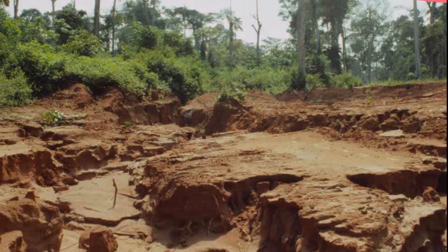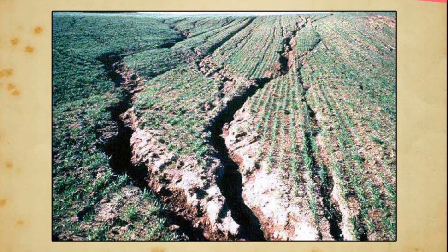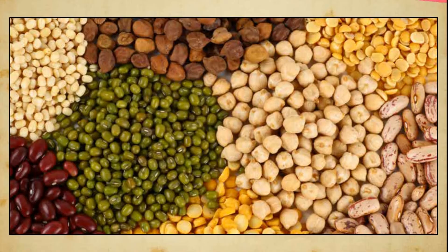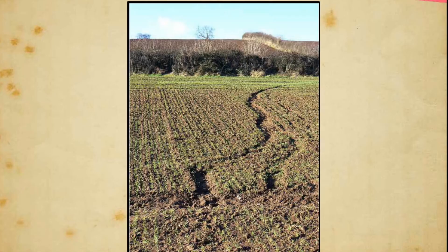Soil depletion and erosion are the two main problems of soil. Continuous cultivation of crops robs the soil of its fertility. If the same crop is grown every year, the soil may become deficient in some nutrients. Some crops, like leguminous crops, help maintain soil fertility by returning nitrogen content to the soil. Fertility can also be restored by application of manures and fertilizers, but the chemicals in fertilizers can render soil unfit for cultivation in the long run.